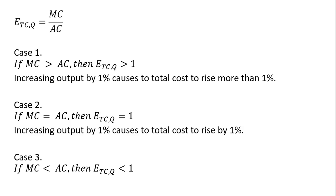And finally, case 3, if marginal cost is less than average cost, we're going to get a coefficient that is less than 1. And in this case, increasing output by 1% causes total cost to rise by less than 1%.